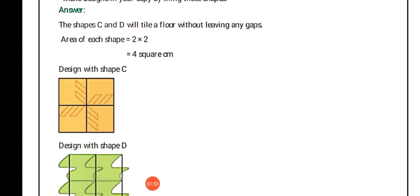To find the area: 2 into 2 equals 4 square centimeter.